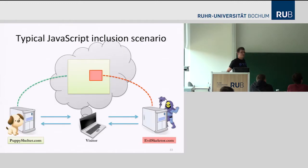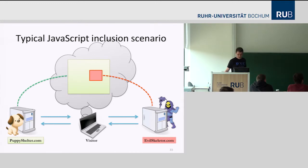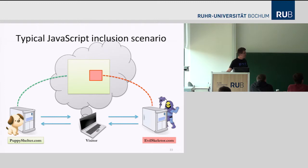Let's look at the typical JavaScript inclusion scenario. In the middle there is us — the visitors — visiting PuppyShelter.com, the most friendly website I could find. On the other side is EvilSkeletor.com, who runs an advertisement agency, and PuppyShelter.com wants to show advertisements because it's a charity. What happens in the visitor's browser is that once you load PuppyShelter.com, it fetches content from EvilSkeletor.com and executes it inside its own origin. There are three places where you can solve this problem.